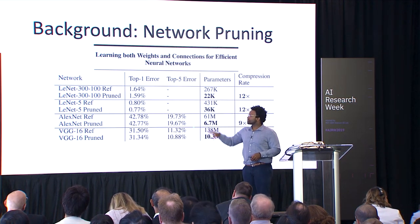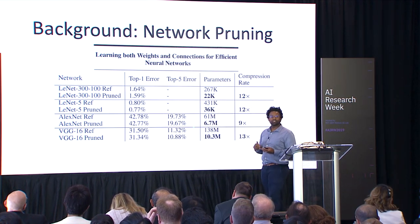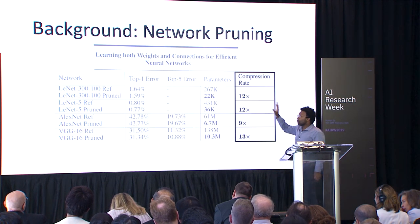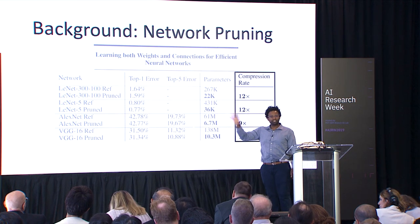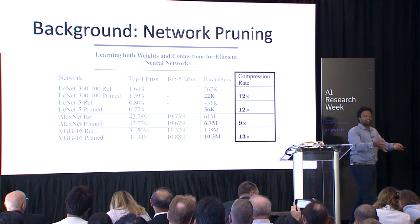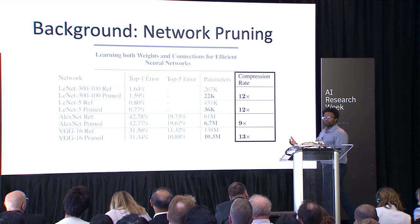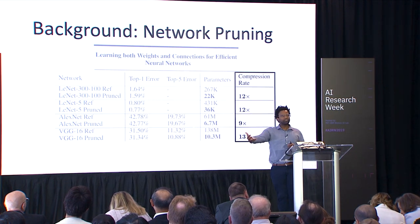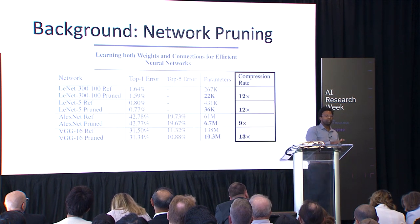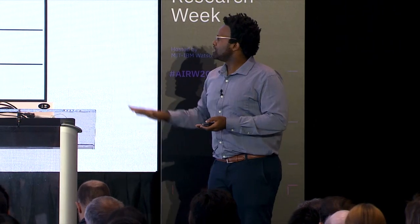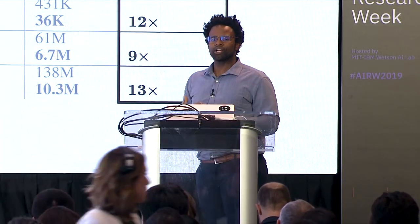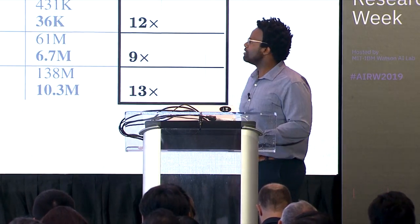This has been fantastically successful in the literature. For a wide variety of datasets and architectures, you can reduce the size of networks by an order of magnitude. This is great for deployment — at inference time you can shrink networks down by an order of magnitude and reduce those costs. But we're also interested in reducing the cost of training, and pruning so far is really only useful for inference.